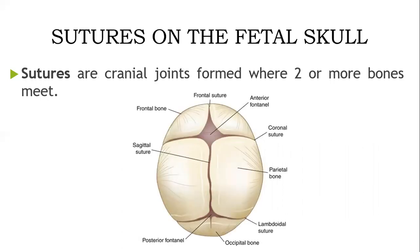Let's consider sutures on the fetal skull. In simpler terms, sutures are just joints on the fetal skull. Sutures are cranial joints formed where two or more bones meet. We have the coronal suture, the sagittal suture, the lambdoidal suture, and the frontal suture.